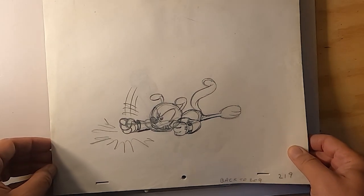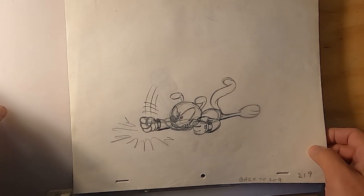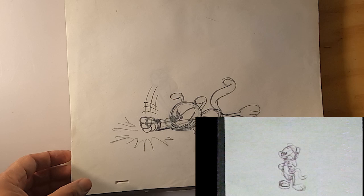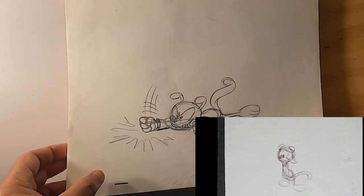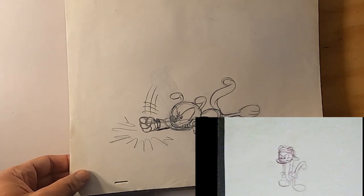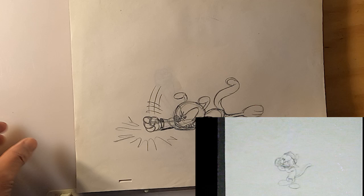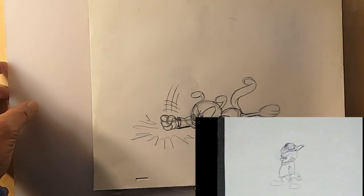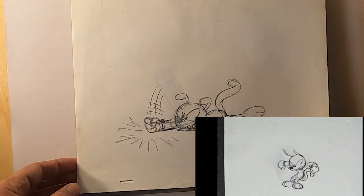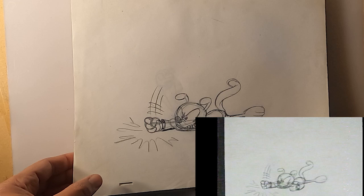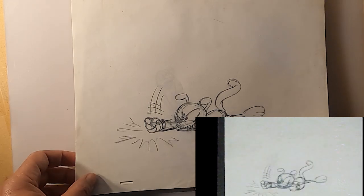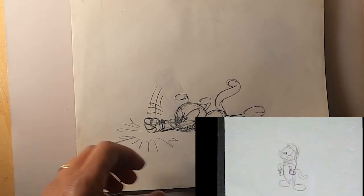So let's do another Animaniacs animation bit. This is another piece that I did for Animaniacs when they were still in development stage at Warner Brothers. And the assignment here was that Wacko is angry. Let's take a look at some of the drawings that I had to do.